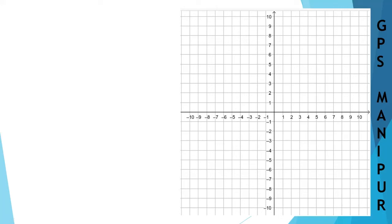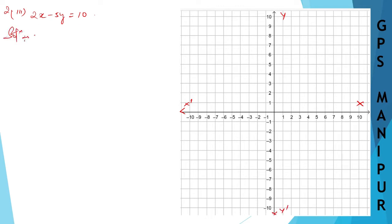We are doing Exercise 4.2, Question 2, Roman number 3, which is 2x minus 5y equals 10. Here is the x-axis and here is the y-axis. For the solution, transferring 5y to the right side gives 10 plus 5y, so x will be equal to 10 plus 5y divided by 2. Let me draw the table for this.